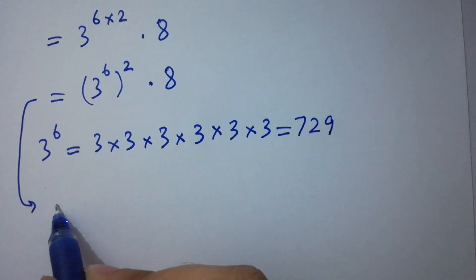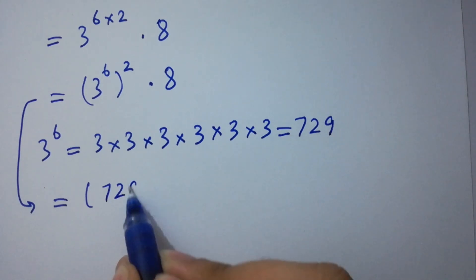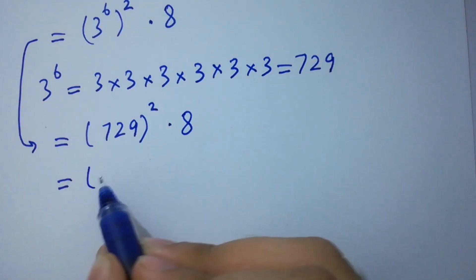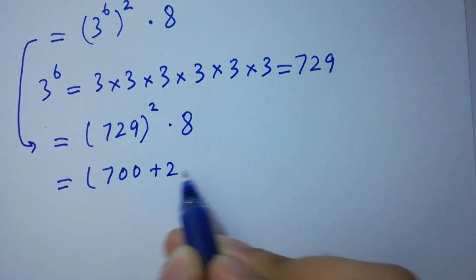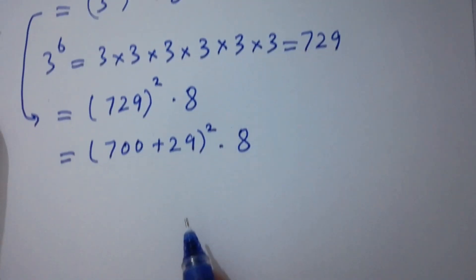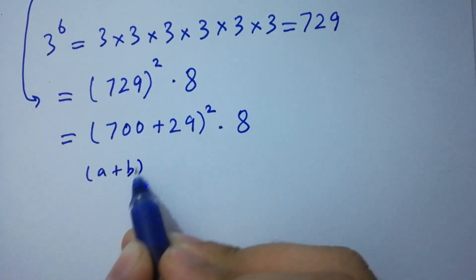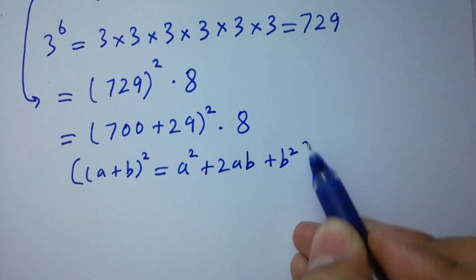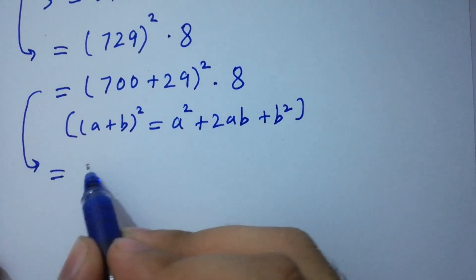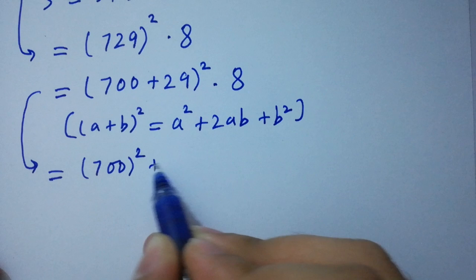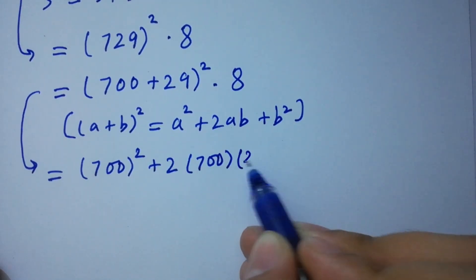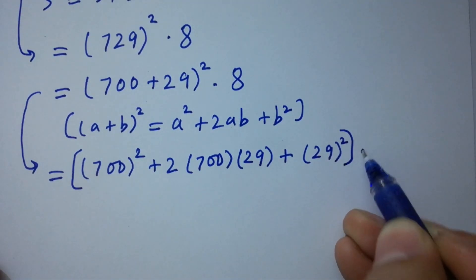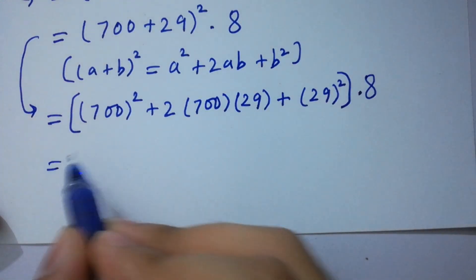So the expression becomes 8 times 729 to the whole power 2. We know the formula for a plus b whole squared, which equals a squared plus 2ab plus b squared. Writing 729 as 700 plus 29, we apply this expansion.